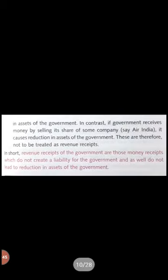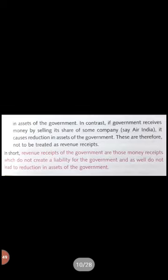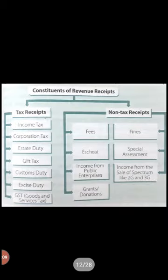If we talk about sources of revenue receipts, there are two types: tax revenue and non-tax revenue. Tax receipts mean the government has imposed a tax. Non-tax receipts mean the government has income from other sources. Let's see their examples.